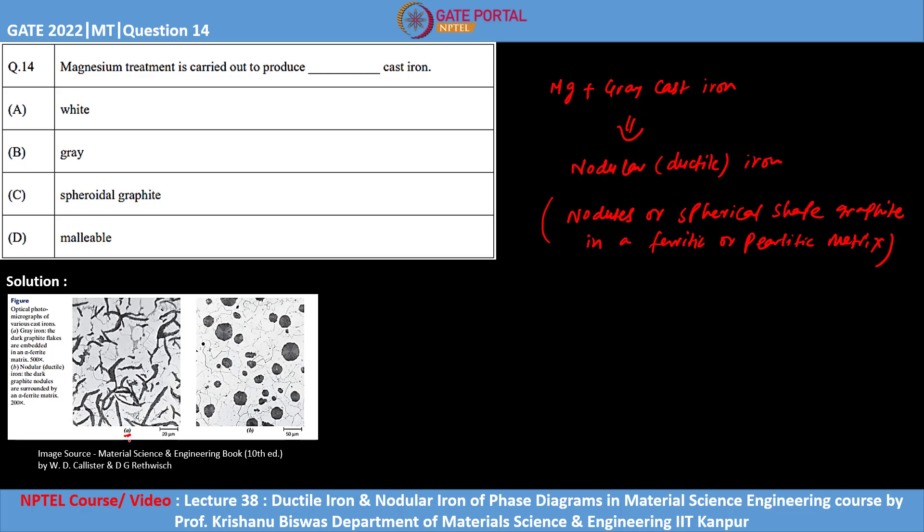To clearly understand this, I have an image which you can see here. Image A is of gray cast iron and image B is of nodular or ductile cast iron. The conversion from gray cast iron to ductile iron is possible by giving magnesium or sometimes cerium treatment.